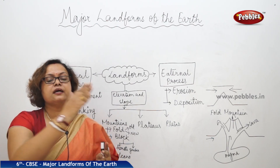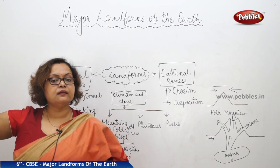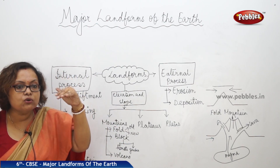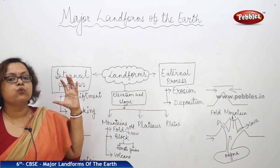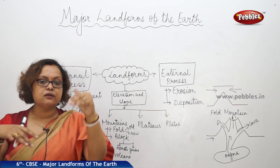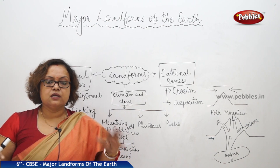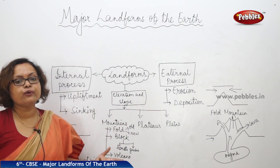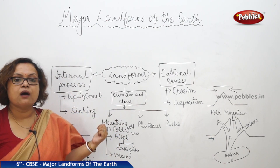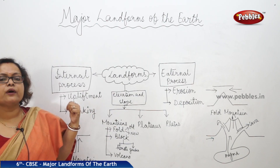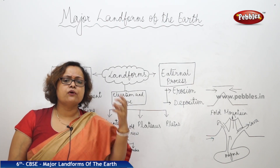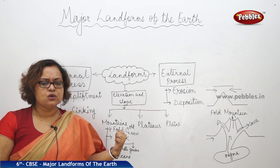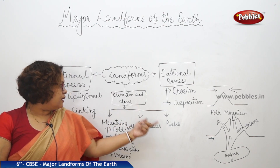Mountains stand as a guard — for example, the Himalayas guard the northern side of India. They stop cold or warm winds from entering the country and act as a climate controller. Most importantly, mountains are where most rivers originate from glaciers, so if we need rivers, we need to preserve mountains.